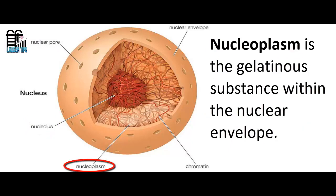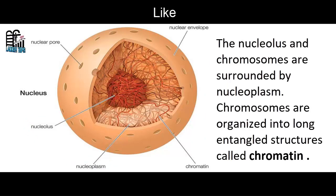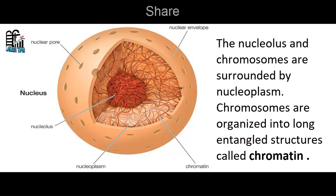Nucleoplasm is the gelatinous substance within the nuclear envelope. The nucleolus and chromosomes are surrounded by nucleoplasm. Chromosomes are organized into long entangled structures called chromatin.